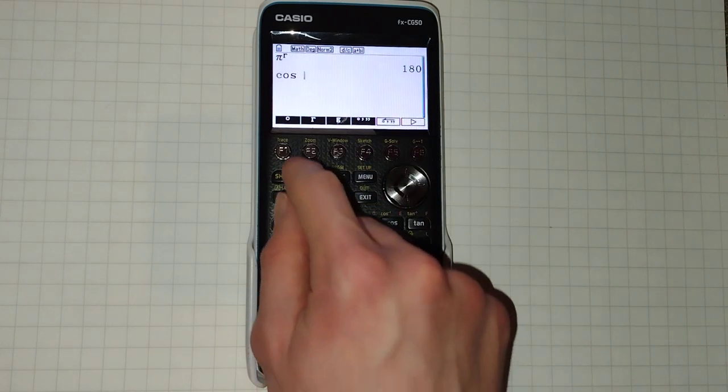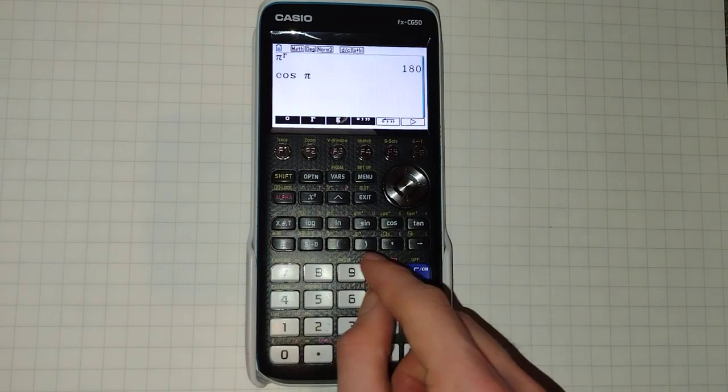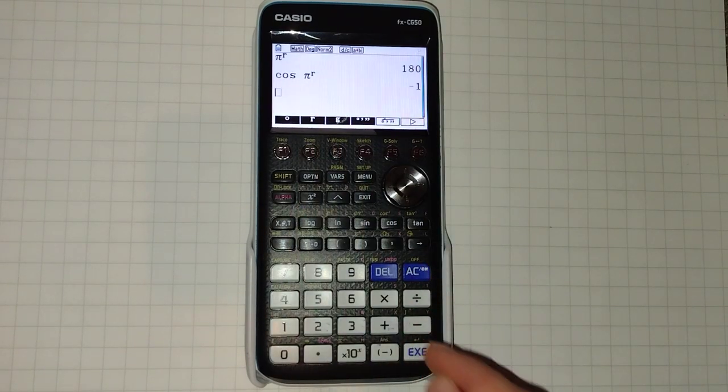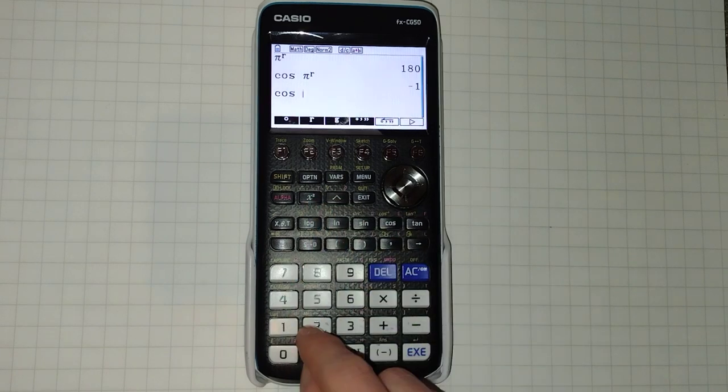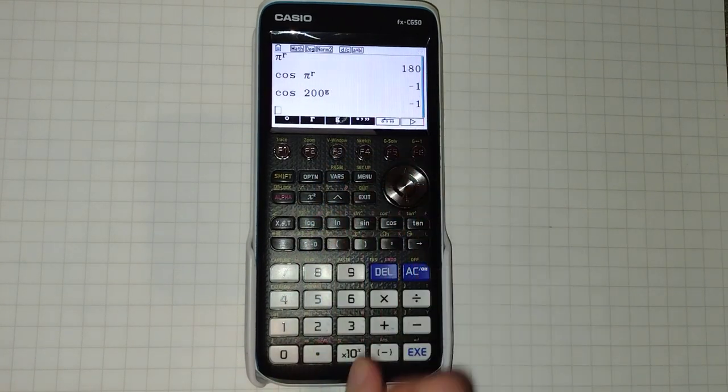And that can be useful if you just need to do one calculation in a different angle unit, like just a one off, such as in these examples.